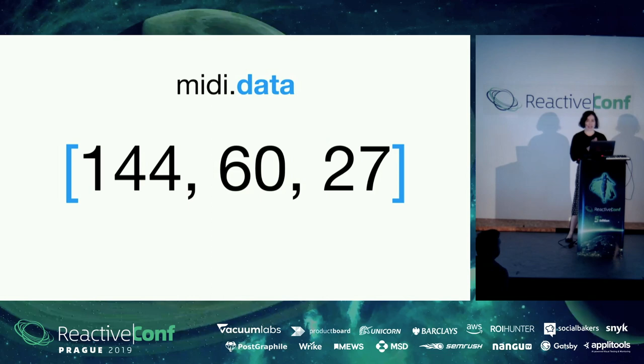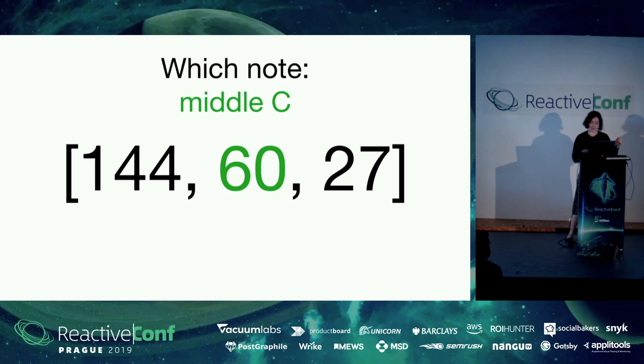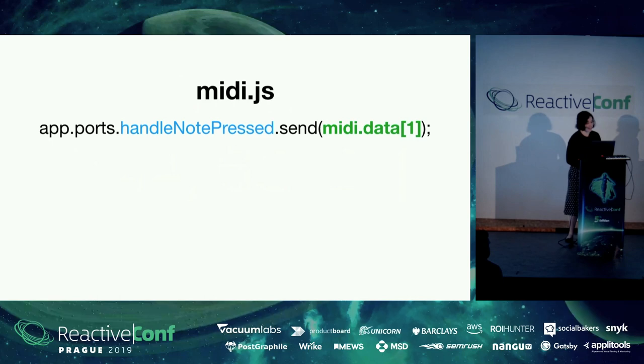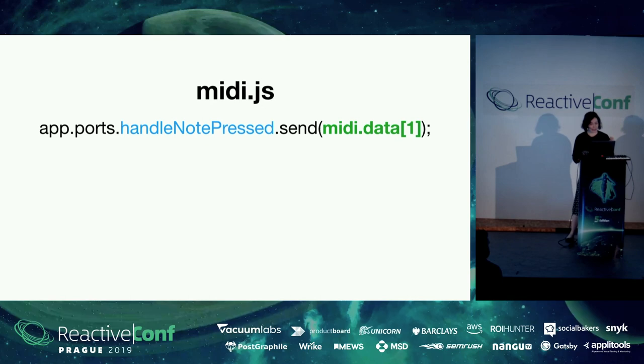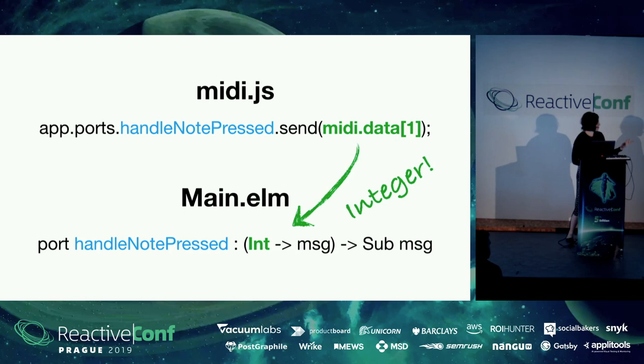What you get in JavaScript is this midi.data array with three numbers. The only one I care about in this application is the middle one — so 60 represents the key middle C. Because ELM doesn't have first-class support for the MIDI API yet, it has pretty good interop with JavaScript, so I'm getting that second integer from the data and passing it into ELM using this ports feature, and then I can handle each note when pressing on the keyboard. I'm just getting a bunch of integers into my ELM code and don't need to worry about JavaScript after that.